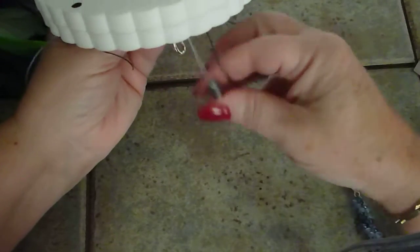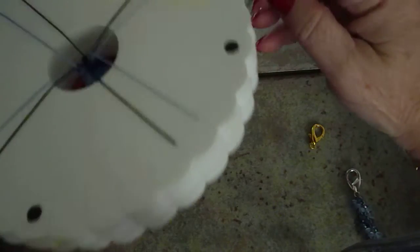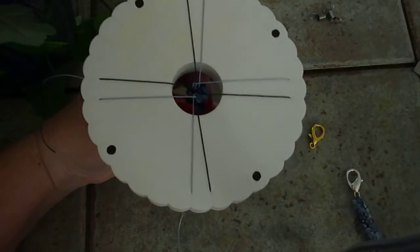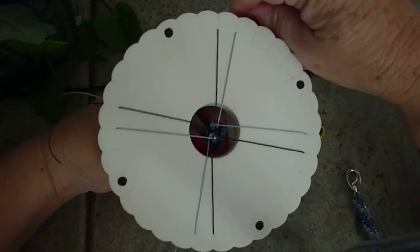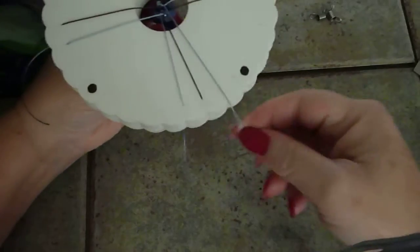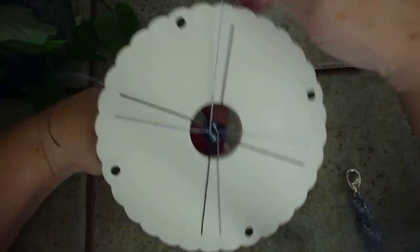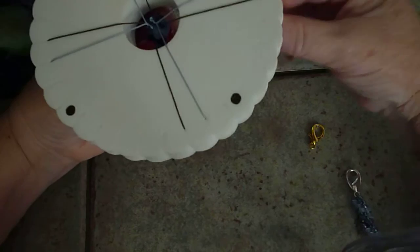And so then you'll just go in and remove your clips or whatever you're using for bead stoppers. And then you're going to braid with no beads for eight times.